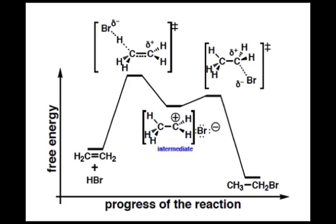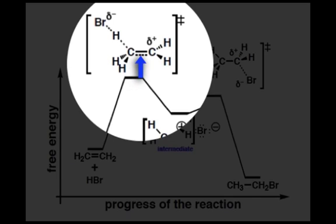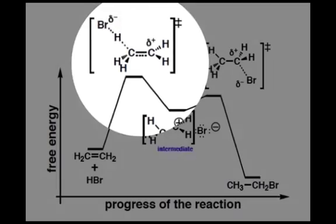And one final note to take out of this reaction coordinate diagram is to take a look at the transition state structure for each step. We can see that while our pi bond broke, we formed a sigma bond between carbon and hydrogen and broke a sigma bond between hydrogen and bromine. And we could also see that a positive charge developed on a carbon atom and a negative charge developed on the bromine atom.